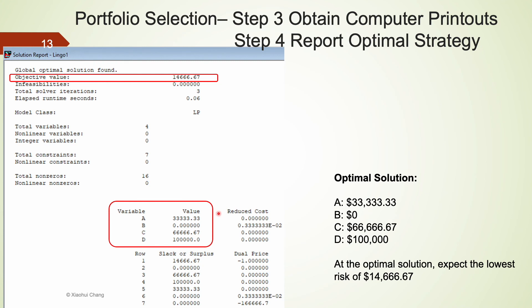Here is the printout from LINGO. The optimal solution is to invest $33,333 in A, $66,666 in C, and $100,000 in D, and we should not invest in B at all. When the management does that, they should expect the lowest portfolio risk of $14,666. I hope you find this example useful in helping you understand how to set up and solve linear programming. This also concludes this video.